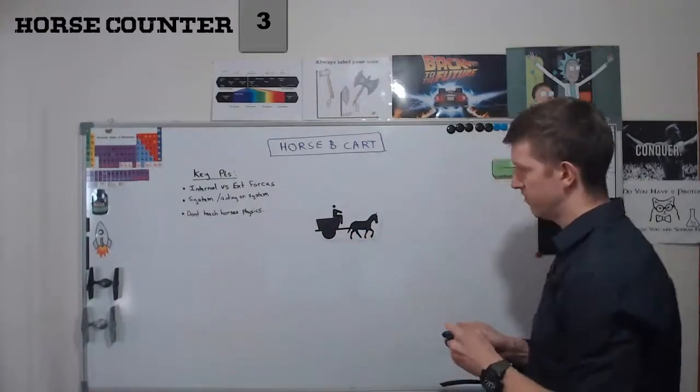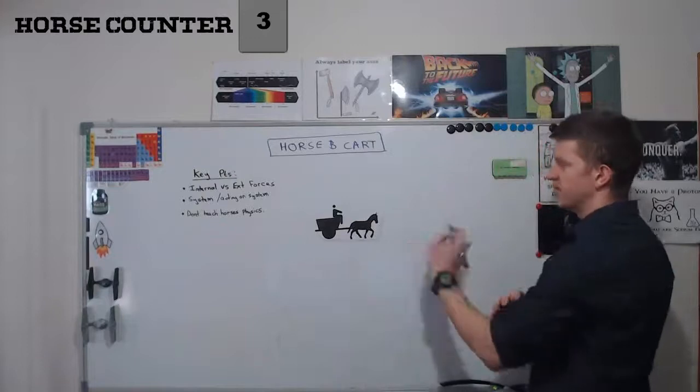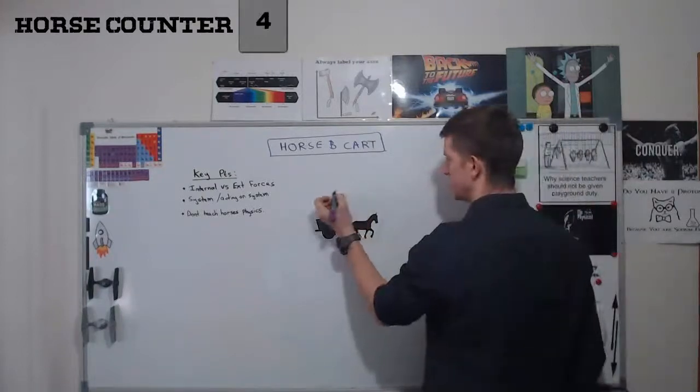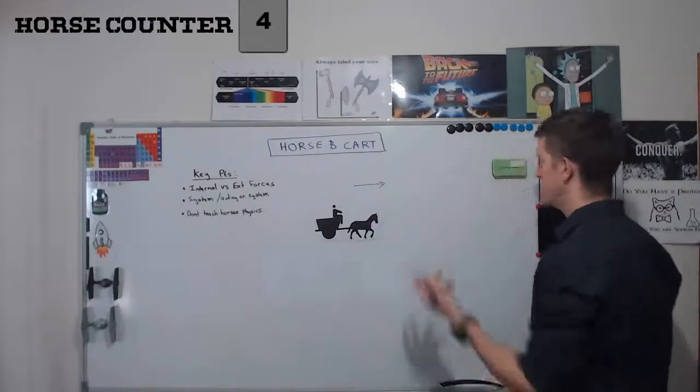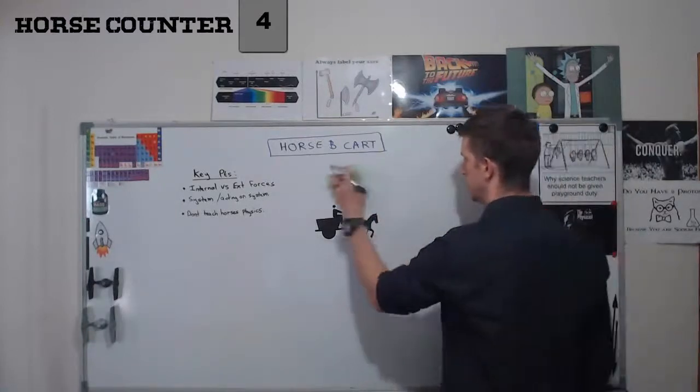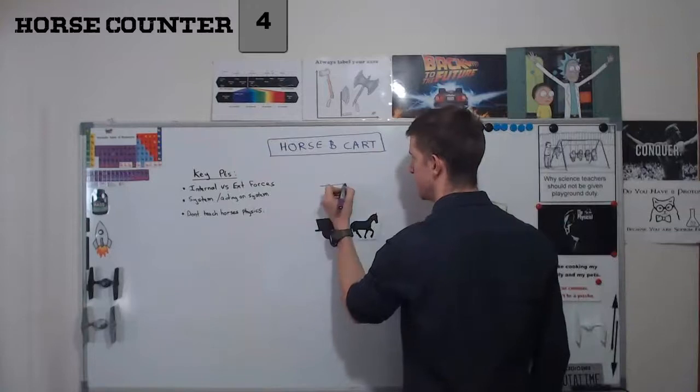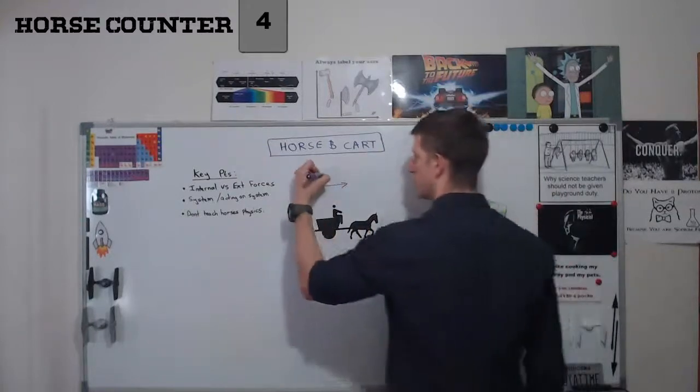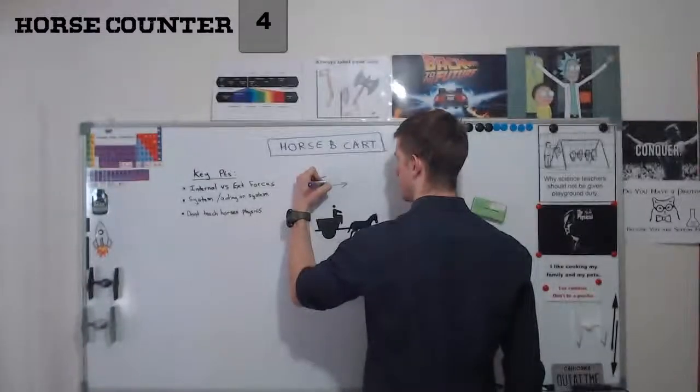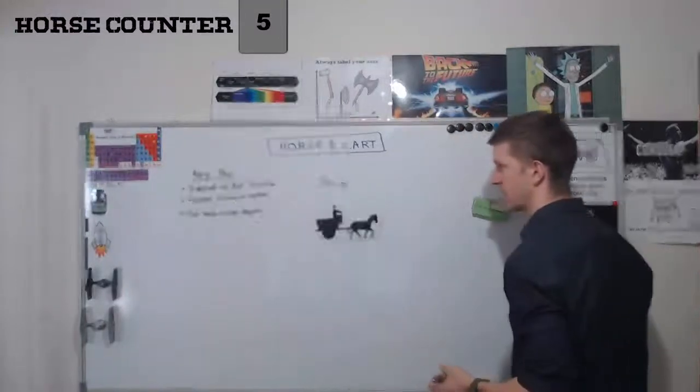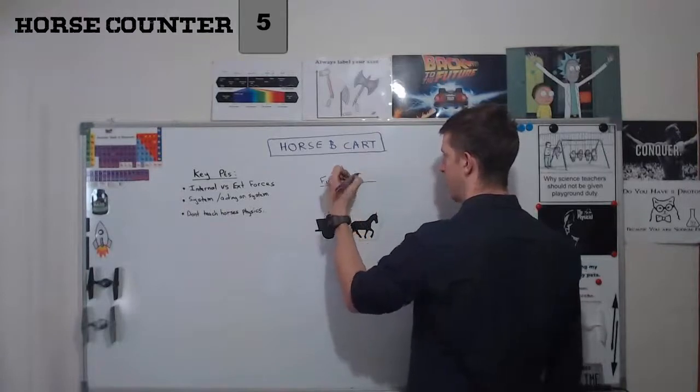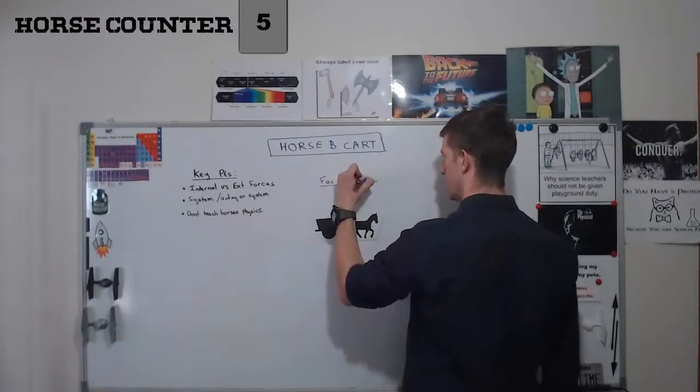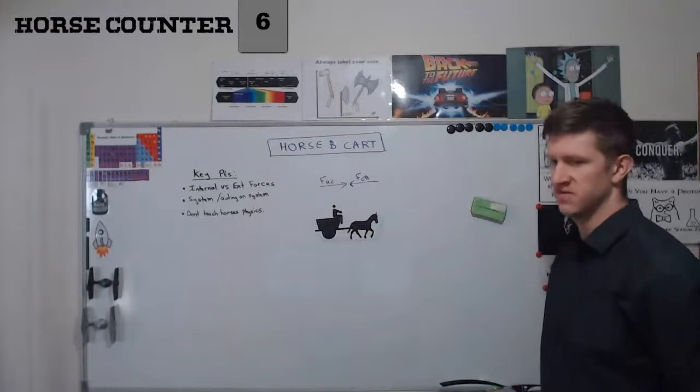So if we draw the forces here of everything that's happening, the horse is pulling on the cart. So if I draw that on the cart to represent the direction, this is the force of the horse on the cart. And the cart is going to pull back on the horse with an equal and opposite force.